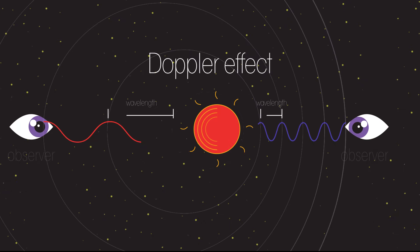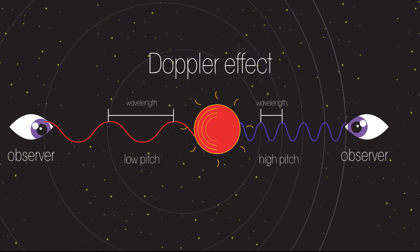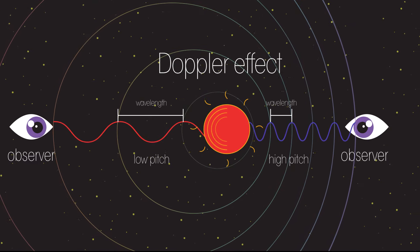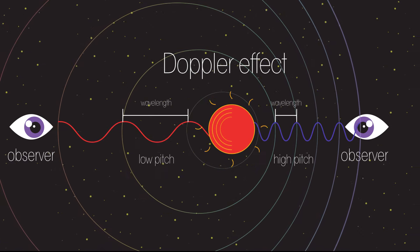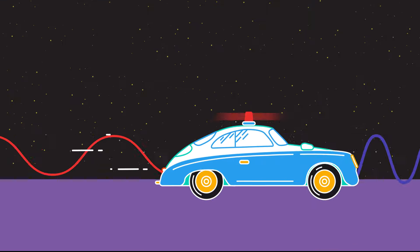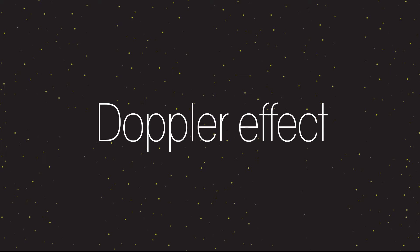The Doppler effect is the observed change in wavelength and pitch of sound, or change in wavelength and color in light, if the source is moving relative to the observer. Have you ever heard a police car pass and noticed the sound of the siren change suddenly? Then you have experienced the Doppler effect.